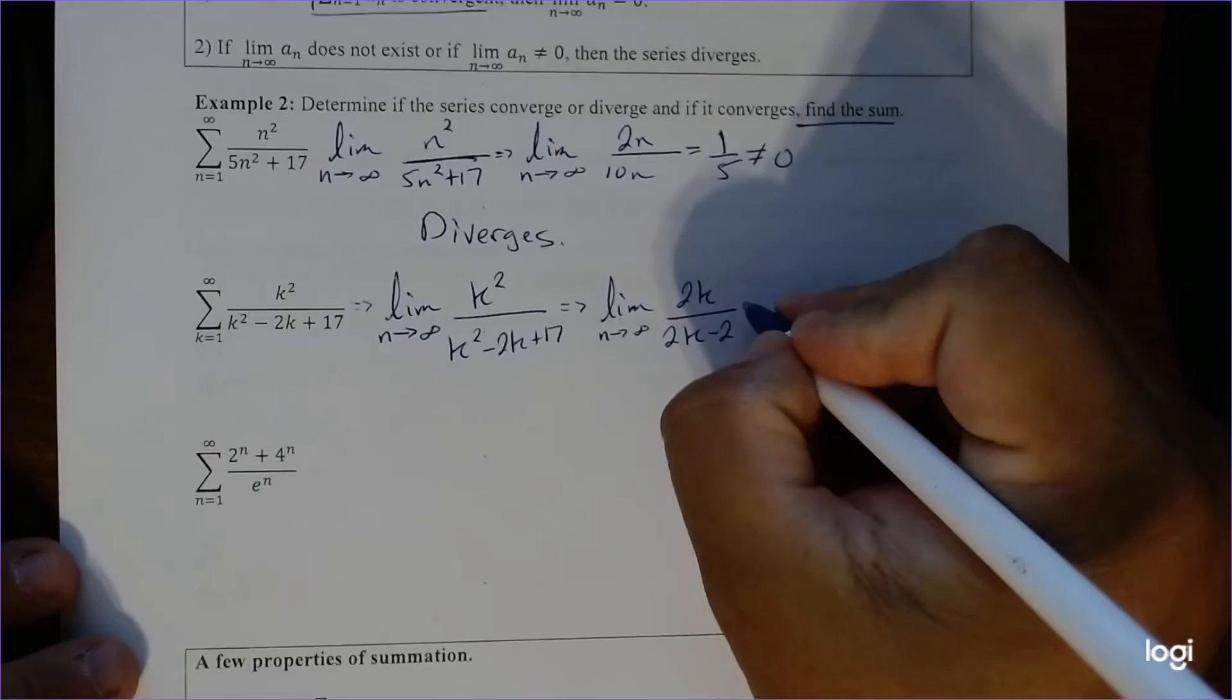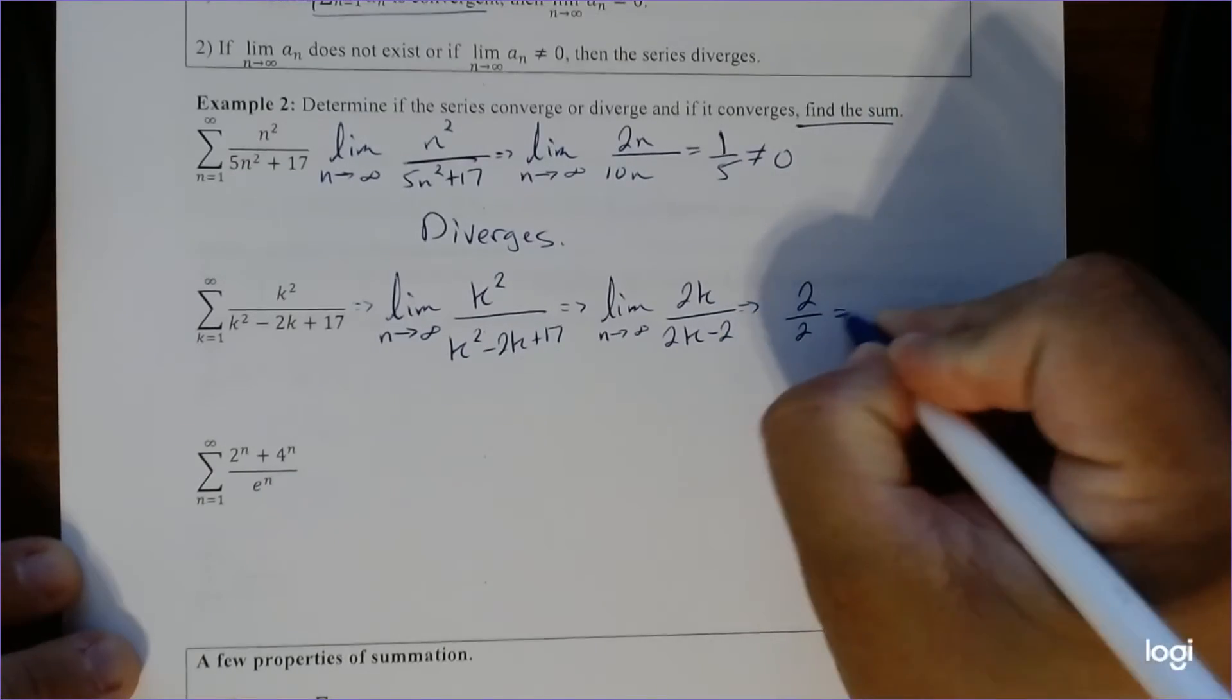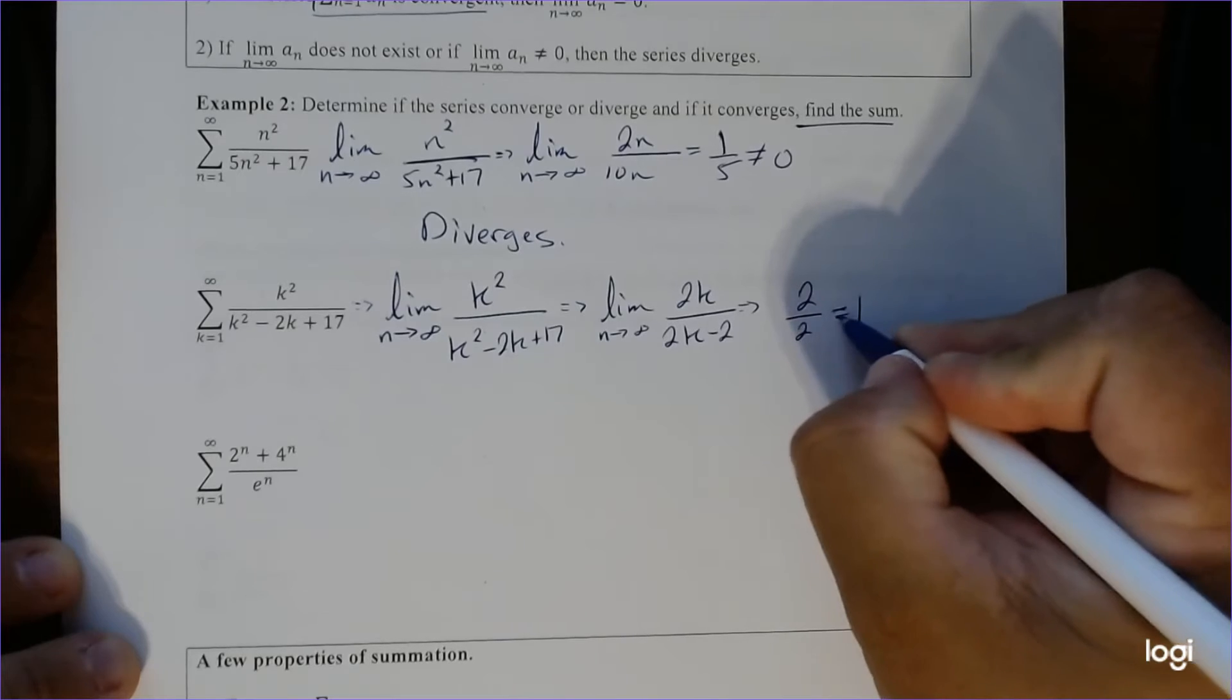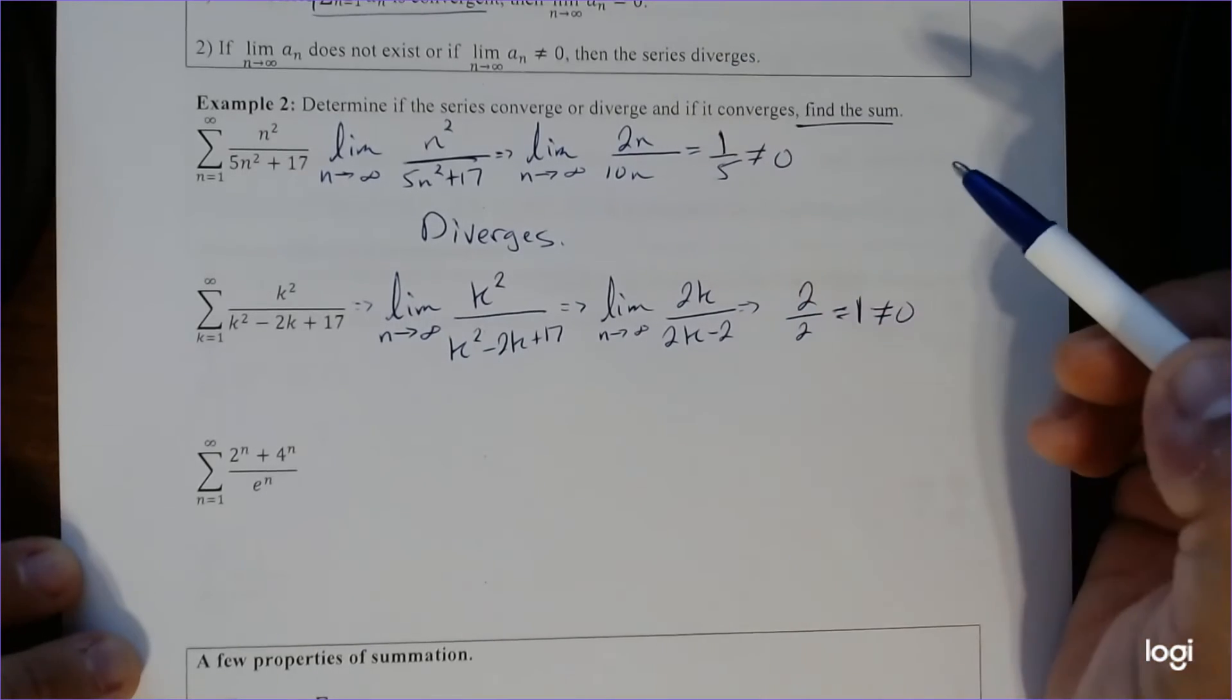And again, we can actually do it again, because again, we both go to infinity, we get 2 over 2, which is just 1. But again, this limit is 1, not equal 0, so therefore, it diverges.